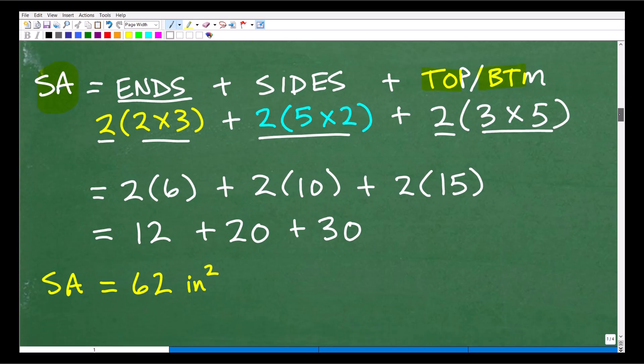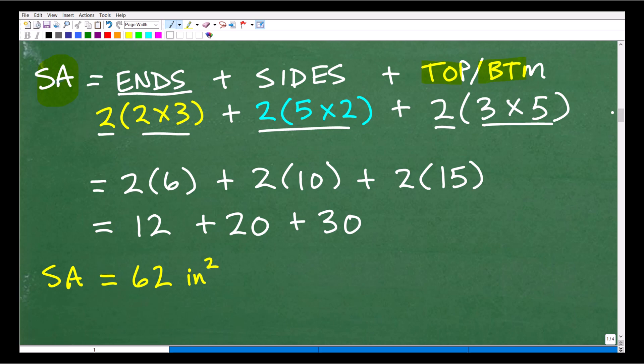Now, all we have to do is do the number crunching. And this doesn't even require a calculator. So, two by three is six. Or two times three, excuse me. This could be interpreted as two by three. This is two times three. So, two times six. We'll figure that out in a second. Two times five times two is ten. So, we'll figure that out. And then two times three times five is fifteen.